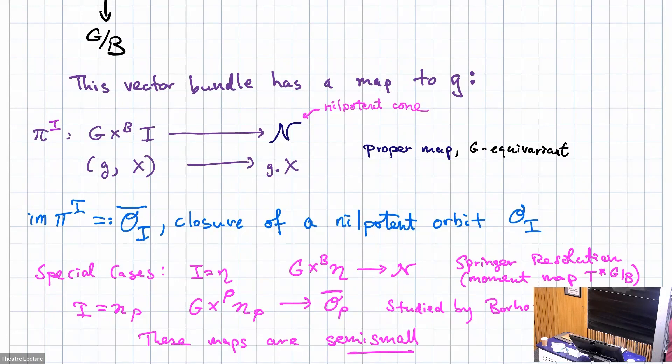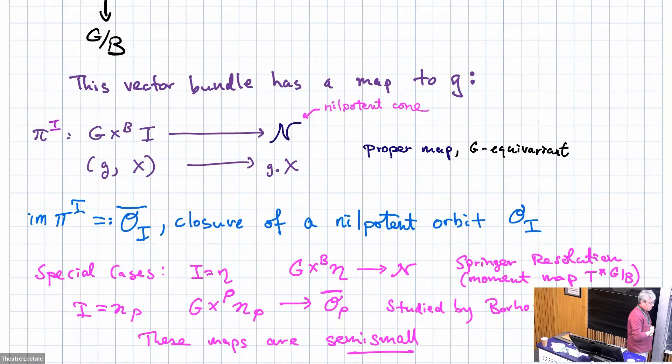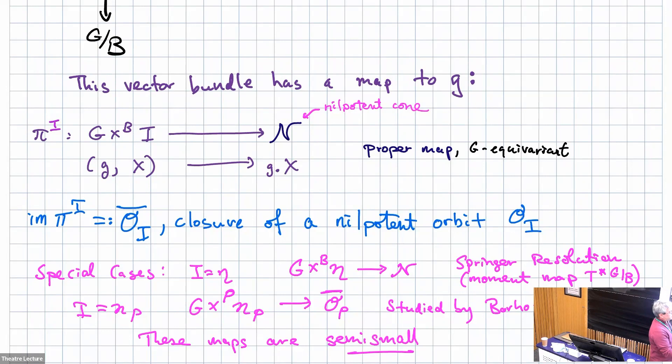For any of these 25,000 things in E8 we can form such a vector bundle. If you're not the nil radical, you'll still end up with something irreducible and closed — the closure of a single nilpotent orbit. There are finitely many nilpotent orbits; in type A they correspond to partitions. The nil radical case is called the Springer resolution. In the parabolic cases, studied by Borho-McPherson, these maps are special: they are semi-small maps, which concerns how the sizes of fibers grow over different orbits.